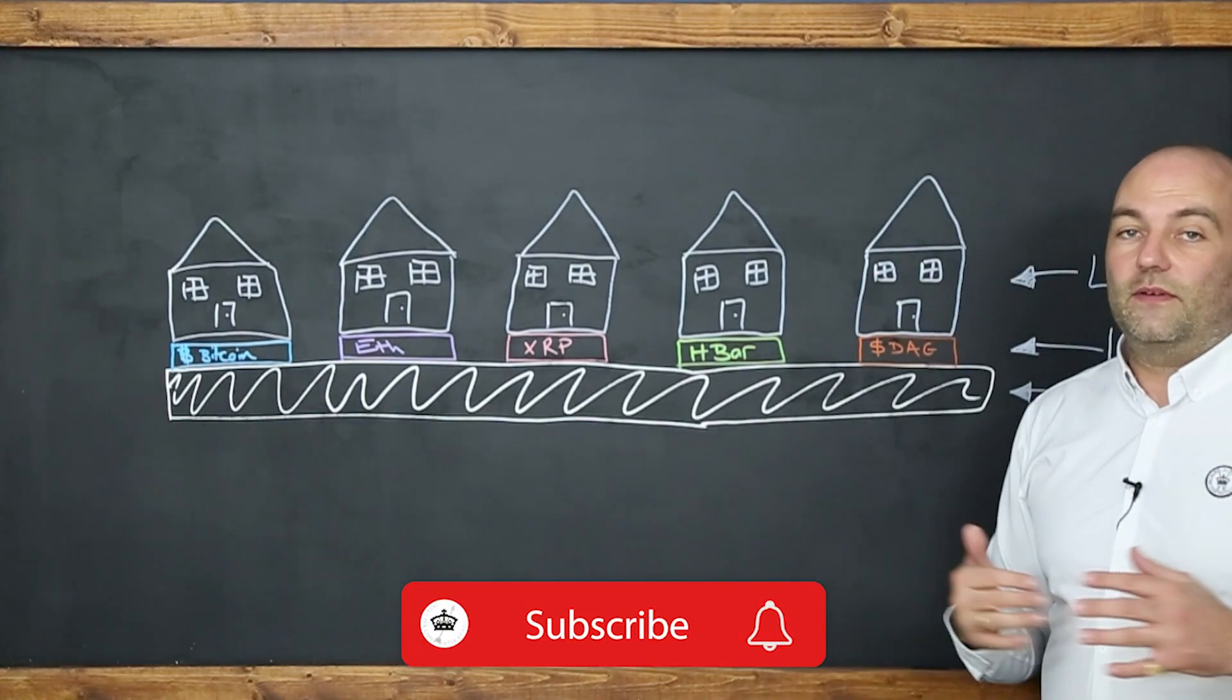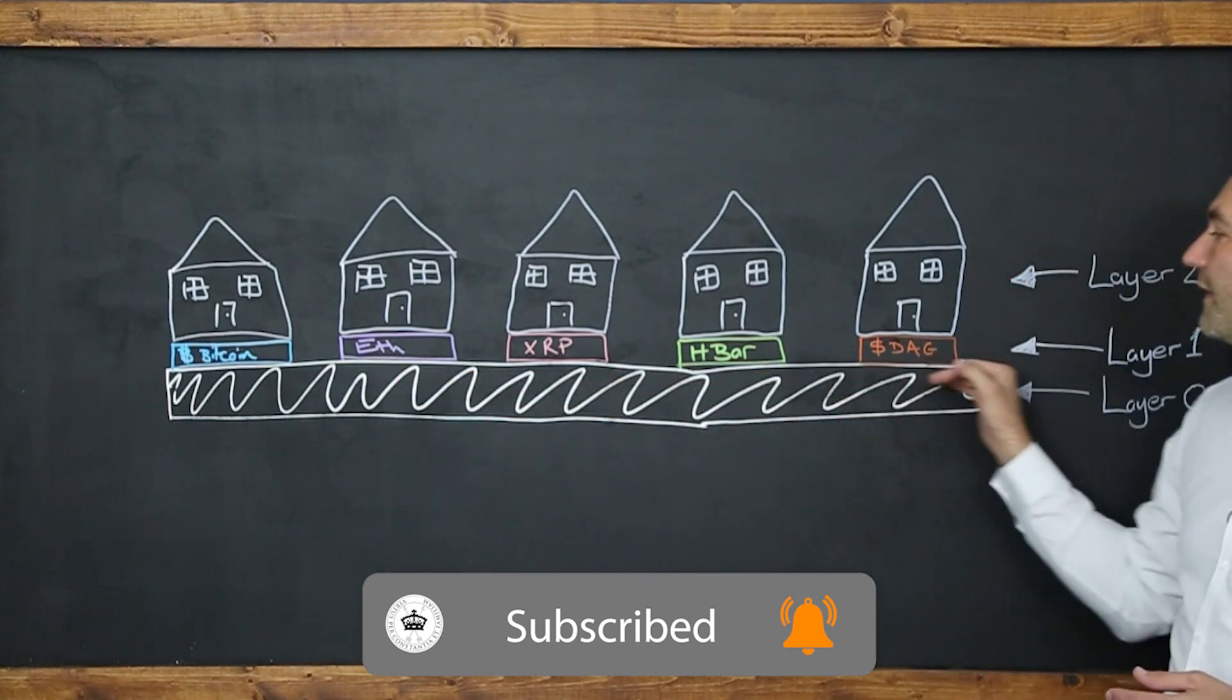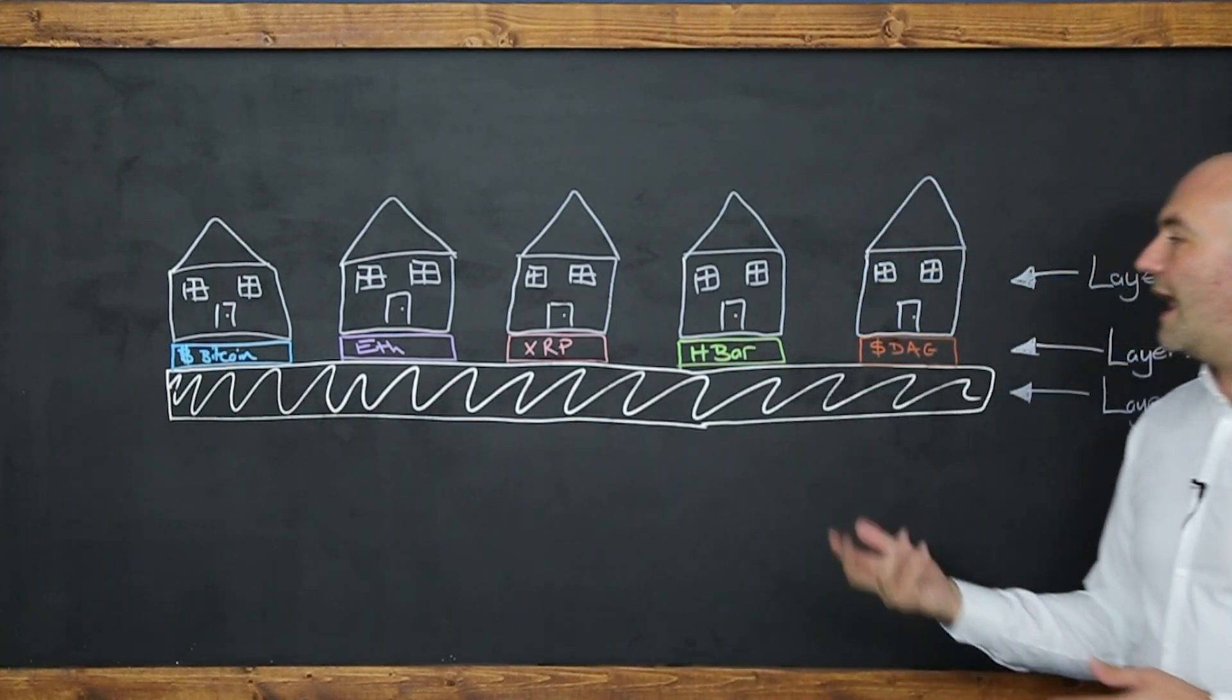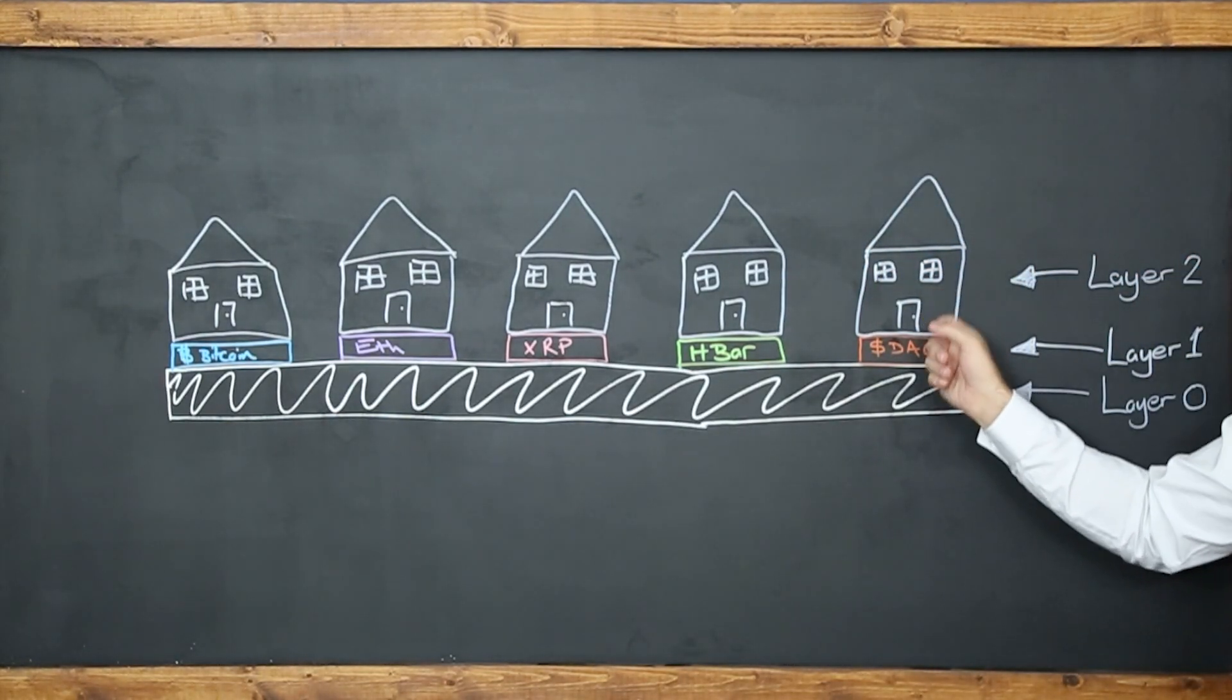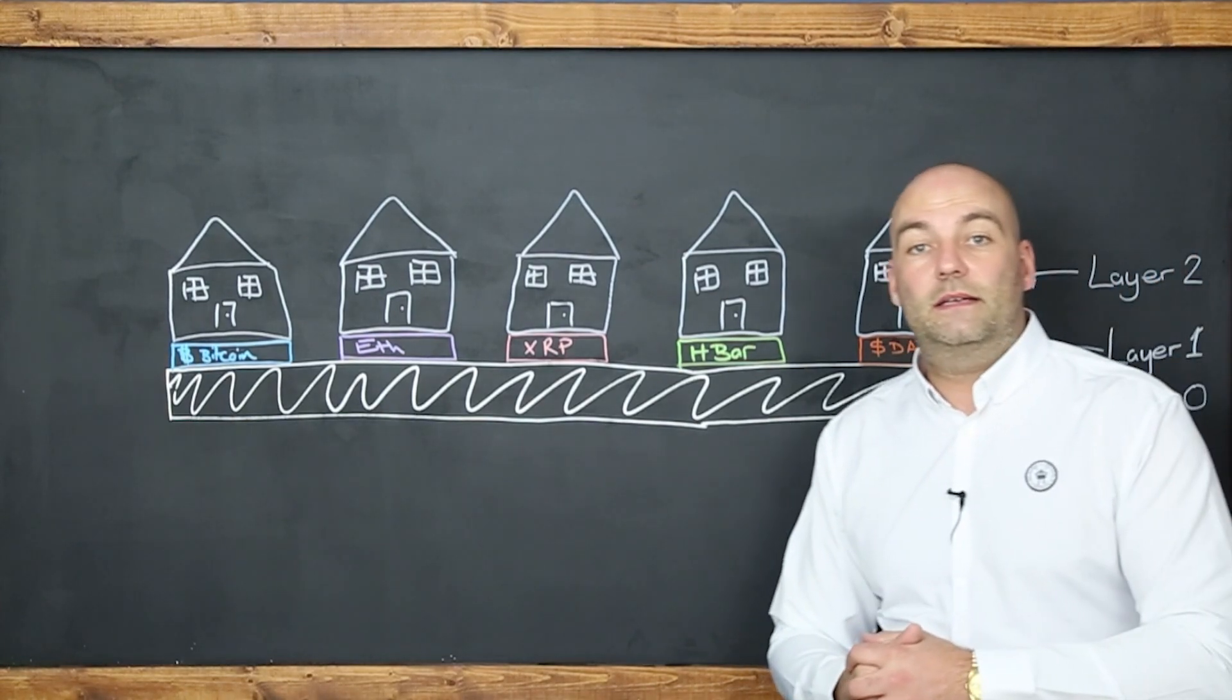So I hope that makes sense. This is the different layers. So just once again, zero layer, sitting along the entire thing. Layer one's built on top of the zero layer. And then all of the apps and the developments on layer two are the houses built on top of the foundation. Thanks so much for watching. Take care.